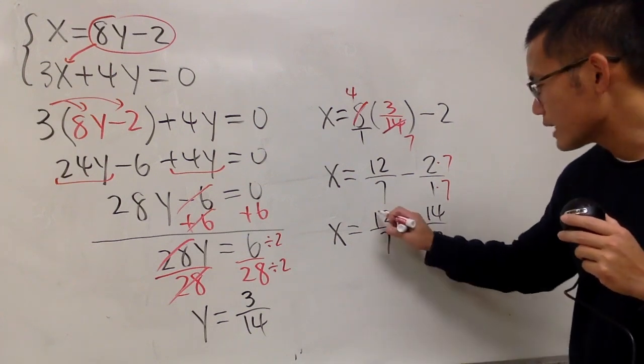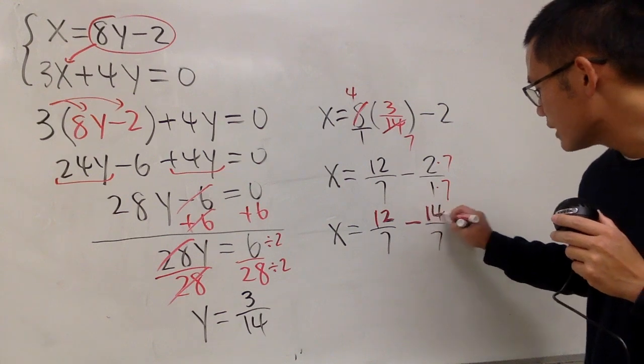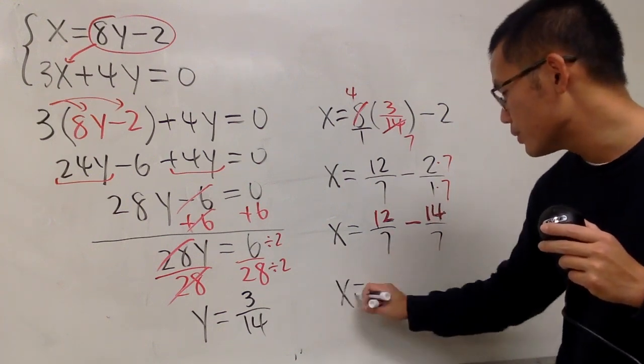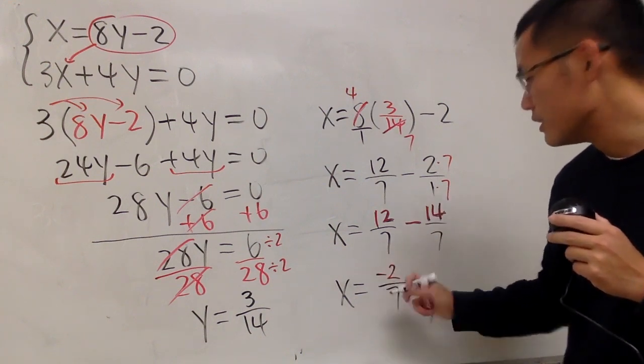And finally, we just have to focus the top. 12 minus 14. That will give us negative 2. So, x is equal to... The top gives us negative 2. And the denominator stays the same.